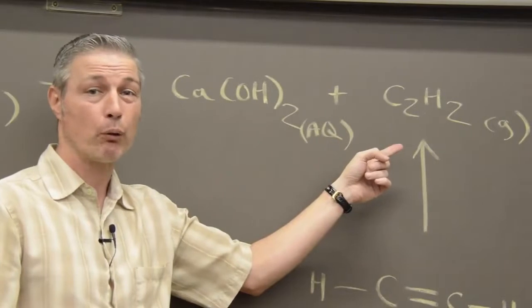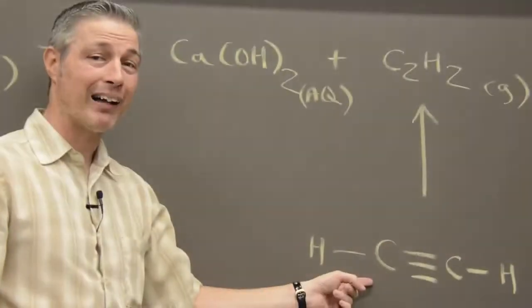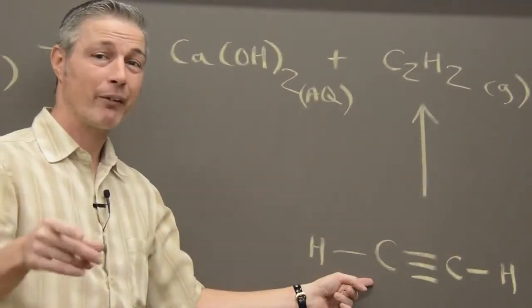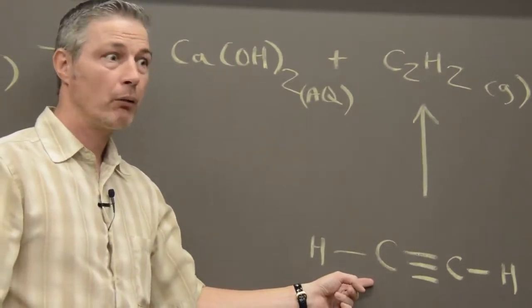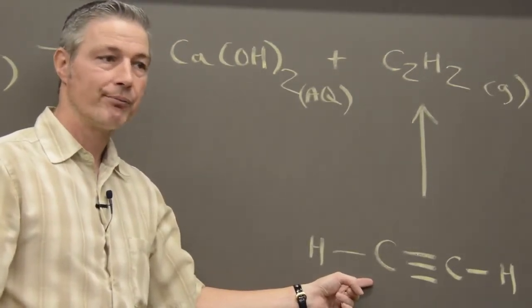but it also reacts with lots of other things. Today, we're going to react it with chlorine. That's because of this triple bond. Triple bonds are very unstable. Why don't we go and burn some acetylene?